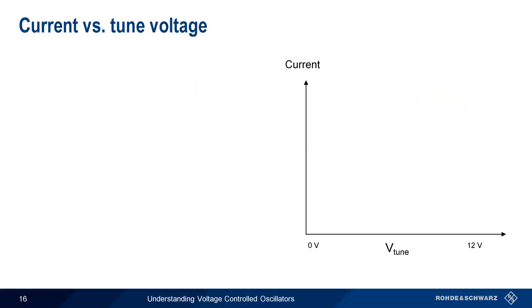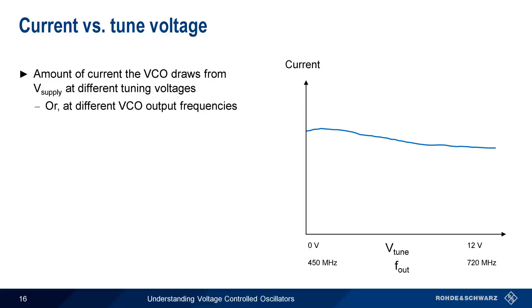The current versus voltage measurement answers the question, how much supply current does a VCO draw at different tuning voltages? If sensitivity is linear, this measurement also provides current consumption as a function of VCO frequency. Ideally, the current consumption should be as low as possible and flat across the tune voltage range.